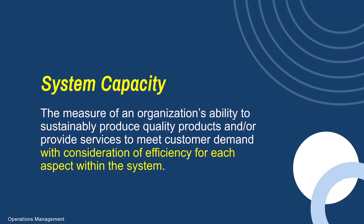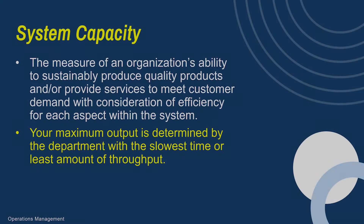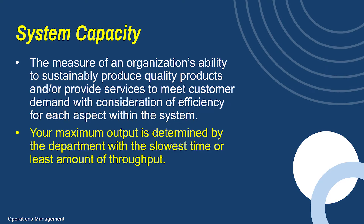There's another aspect called system capacity. System capacity is driven by the number of goods or services we can produce based on demand, but we also consider the strongest and weakest points within that system. This is where we get into bottlenecks and specific departments that could be causing low throughput. Your maximum output is going to be driven by the department with the slowest output or the least amount of production.